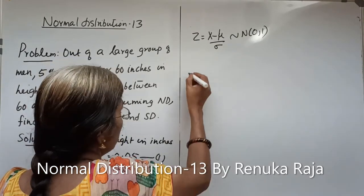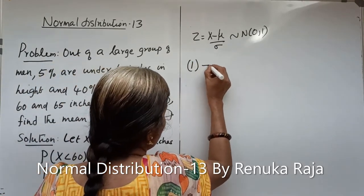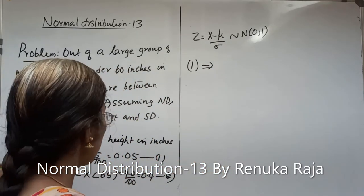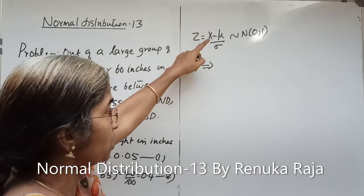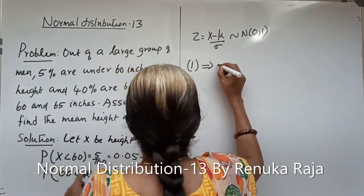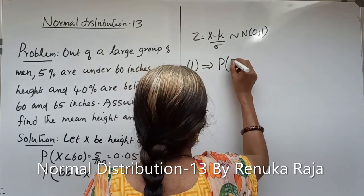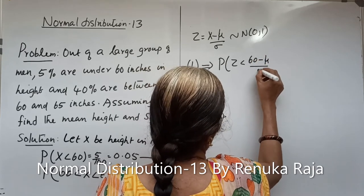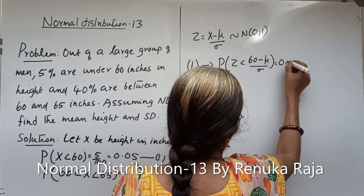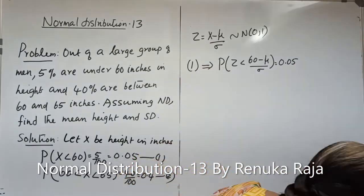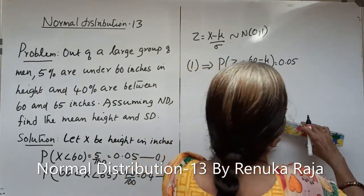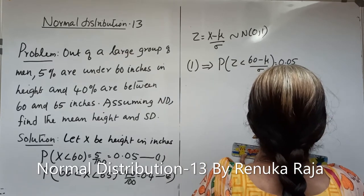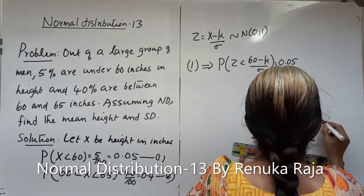Now we consider equation number 1 in terms of z. In place of x, we can obtain z equals x minus μ divided by σ, so that equation 1 becomes: probability z less than 60 minus μ by σ equals 0.05. We can represent this on the standard normal curve.